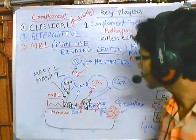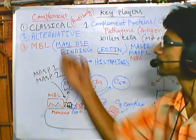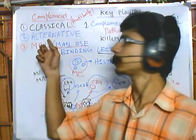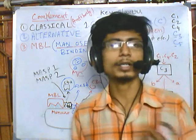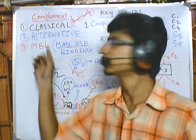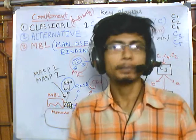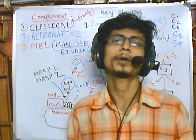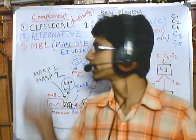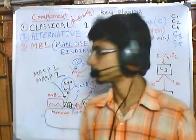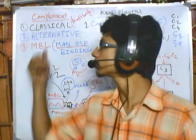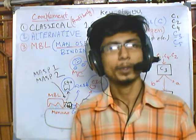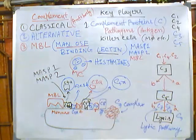In future discussions, we will talk about the alternative pathway of complement activation. Unlike the classical and MBL pathways, the alternative pathway is completely different — it does not depend on the presence of antibodies at all and is somewhat more complex. Thank you.